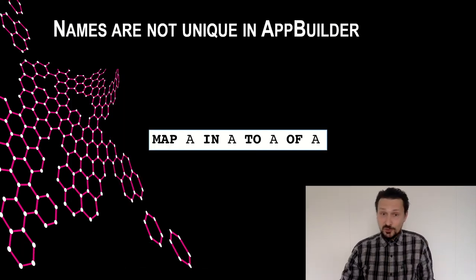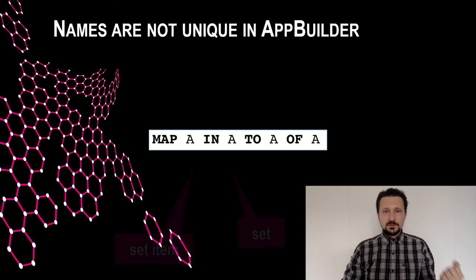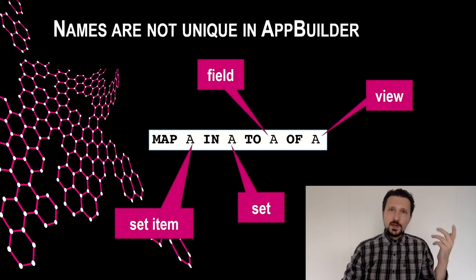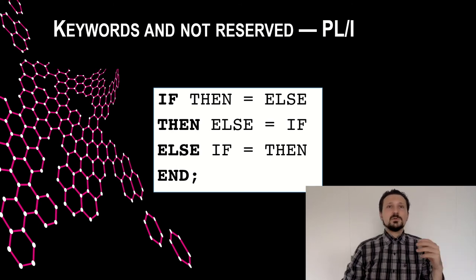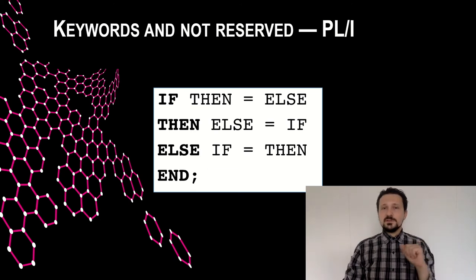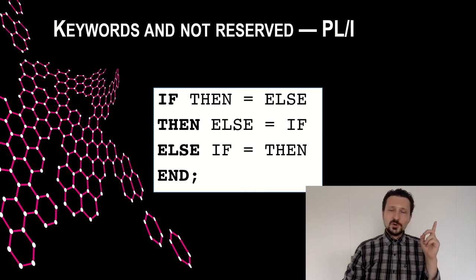In App Builder, names are not unique. You can have a sentence like 'map A in A to A in A' because the keyword 'in' indicates a set item and set, while 'of' indicates a field and view. In PL/1, keywords are not reserved words — you can call your variable 'then', 'else', or 'if', and write 'if then = else, then else = if, else if = then'. This is compilable code if you declare the variables in a DCL block. The twist: the equals sign means comparison on line one but assignment on lines two and three.